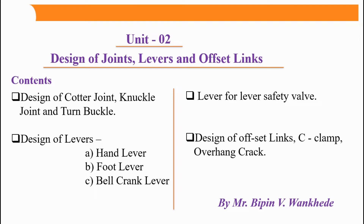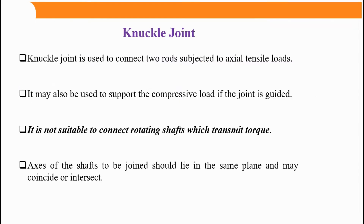As you can see on the slide, Unit Number Two is titled 'Design of Joints, Levers, and Offset Links.' We are going to see all the designs of mechanical joints step by step, and today we are starting with the knuckle joint.